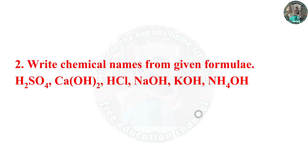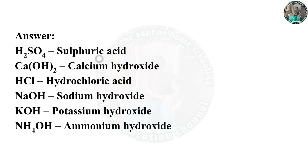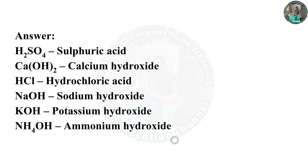The second question: identify the chemical name from the given formula. H2SO4 is sulfuric acid. Ca(OH)2 is calcium hydroxide. HCl is hydrochloric acid. NaOH is sodium hydroxide. KOH is potassium hydroxide. NH4OH is ammonium hydroxide.